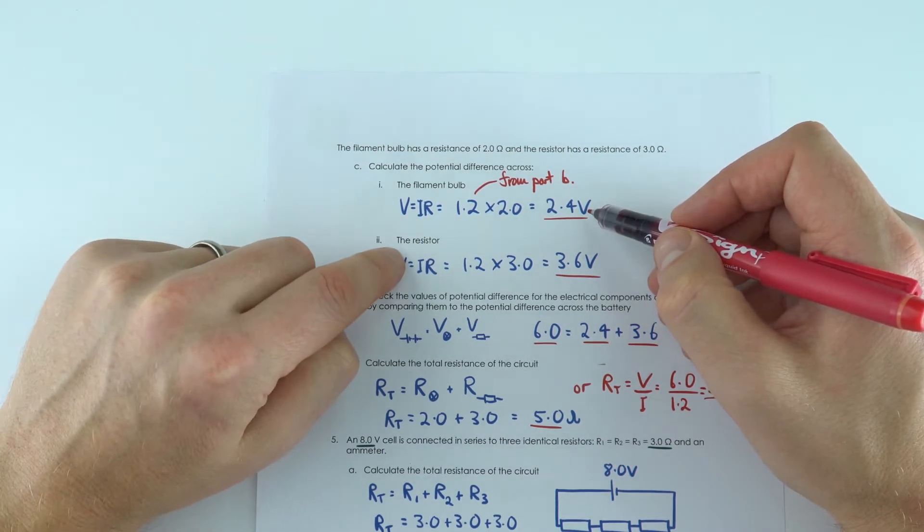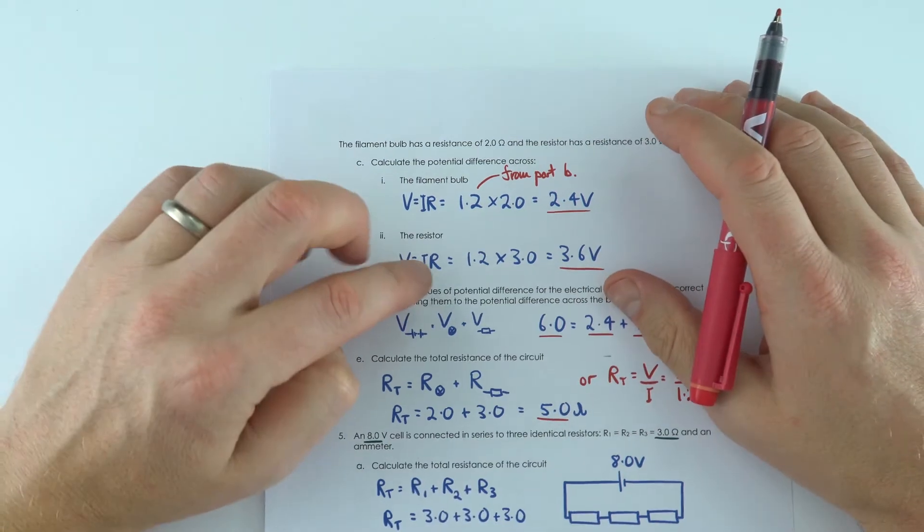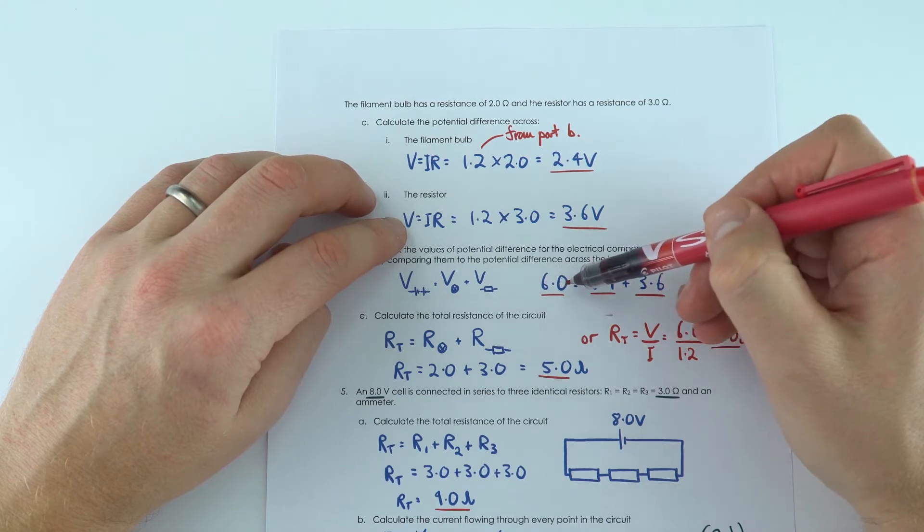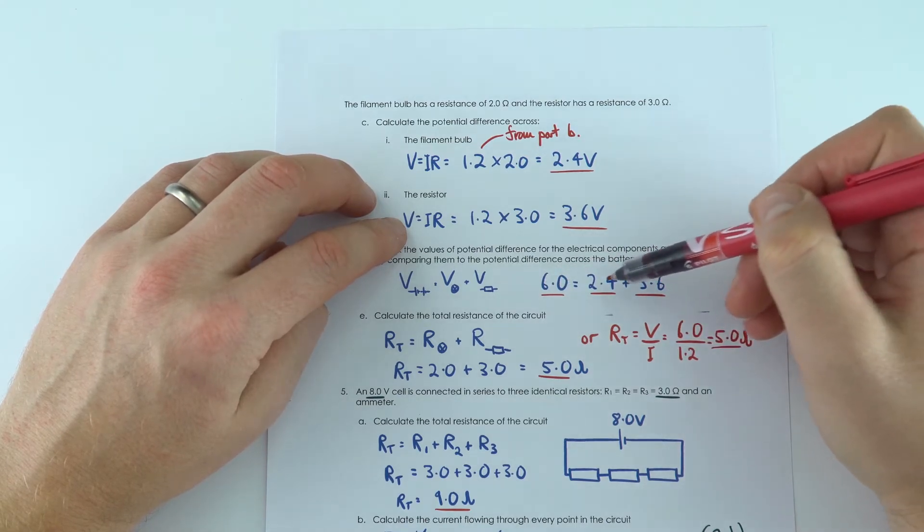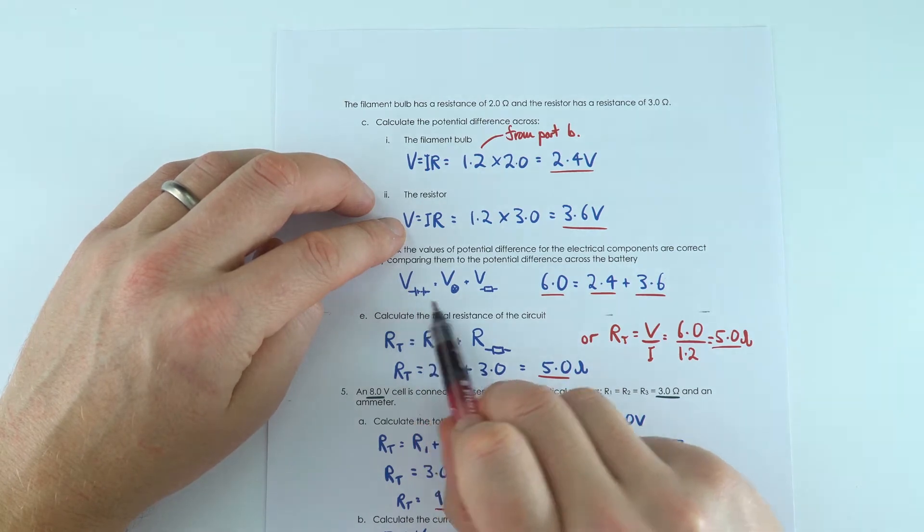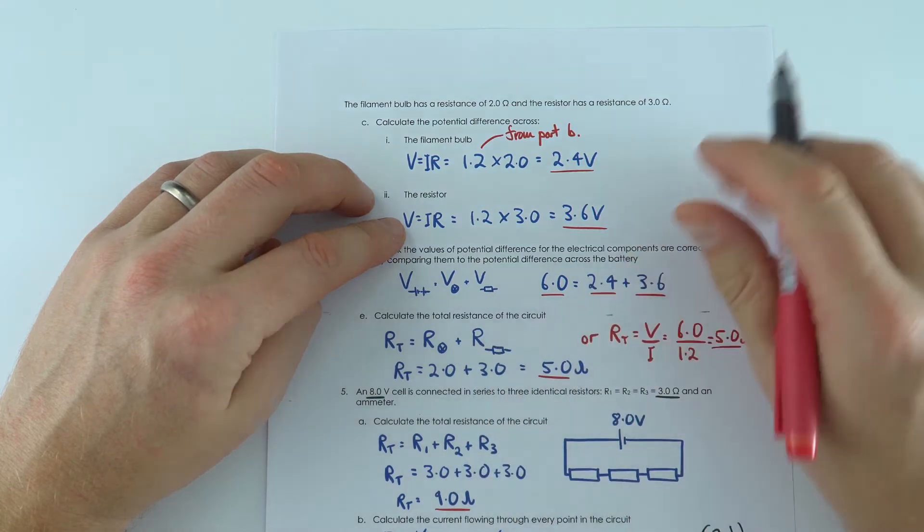and in a similar method across the resistor we had a potential difference of 3.6 volts. And what's important here is that the potential difference of all of those cells is equal to the potential difference across those two components. So the potential difference across the battery is equal to the potential difference across the bulb plus the potential difference across the resistor.